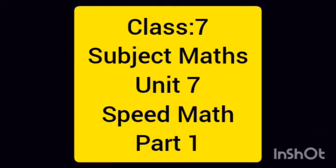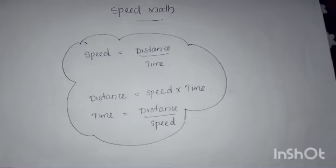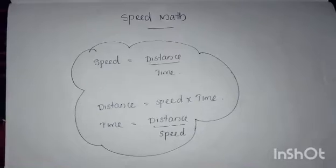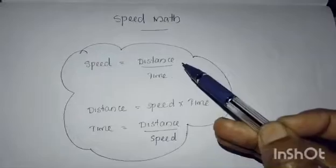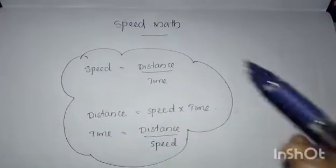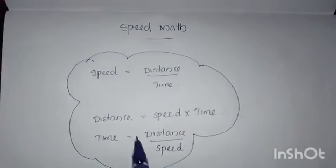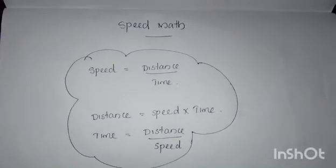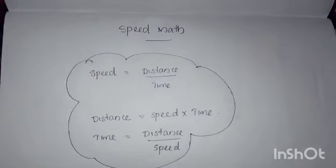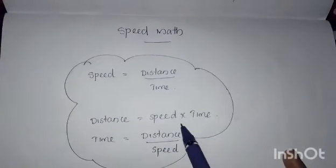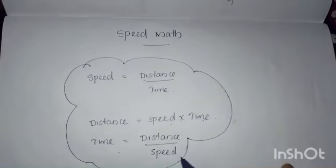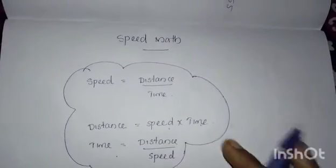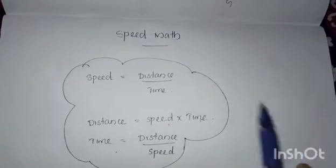Good morning everyone. We are discussing our chapter speed math. In our earlier class we learned what speed is and how we can find it. By dividing distance by time we get the speed. To find distance, we multiply speed with time. And time is distance divided by speed. These are the three specific equations relating to speed math.